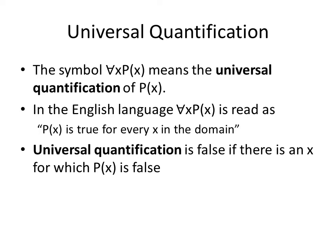Universal quantification can be expressed by this symbol. In the English language, this symbol is read as 'P(X) is true for every X in the domain.' The universal quantification is only false if there is an X for which P(X) is false, meaning you only have to have one exception and the universal quantification is false.